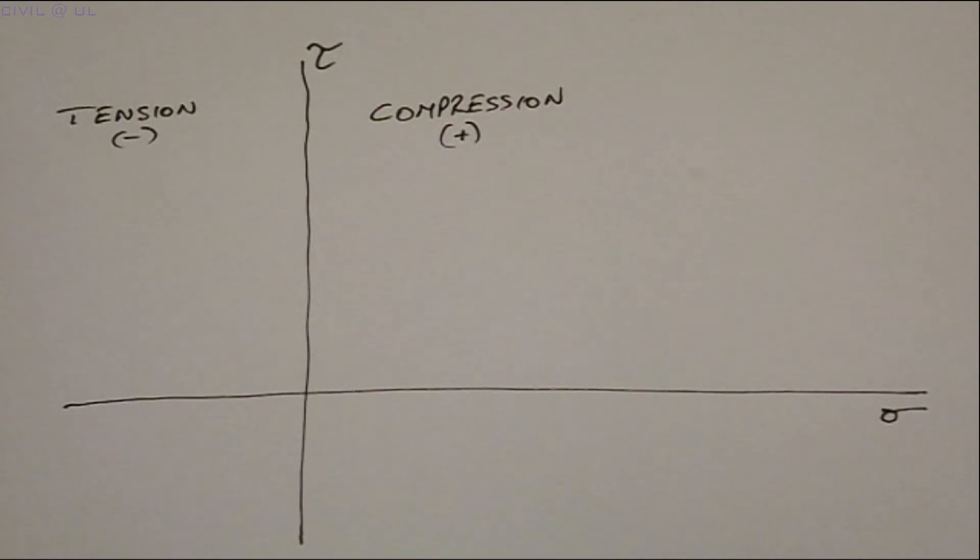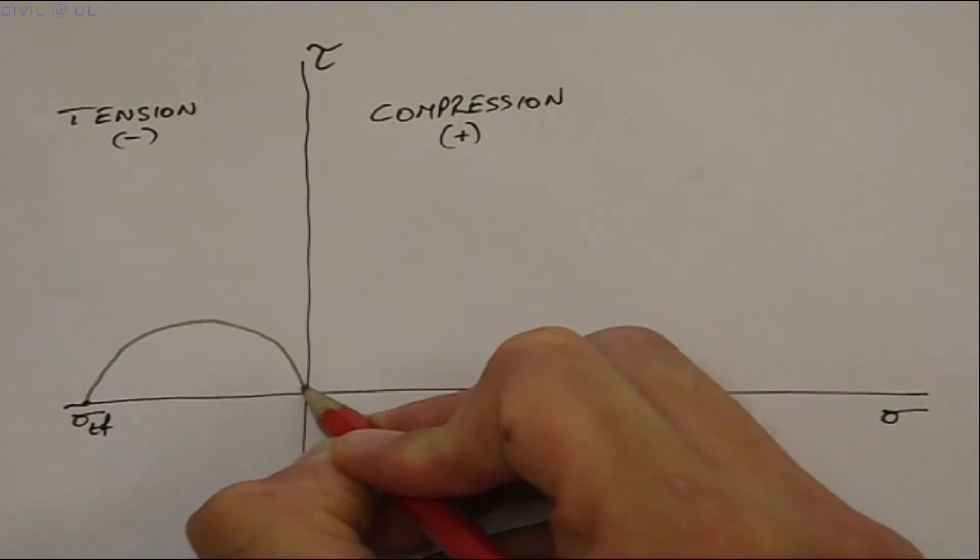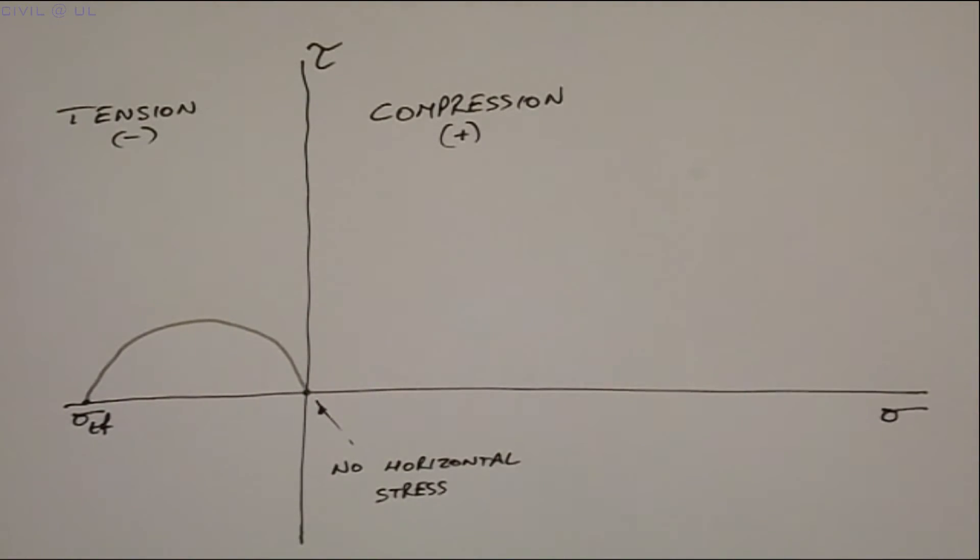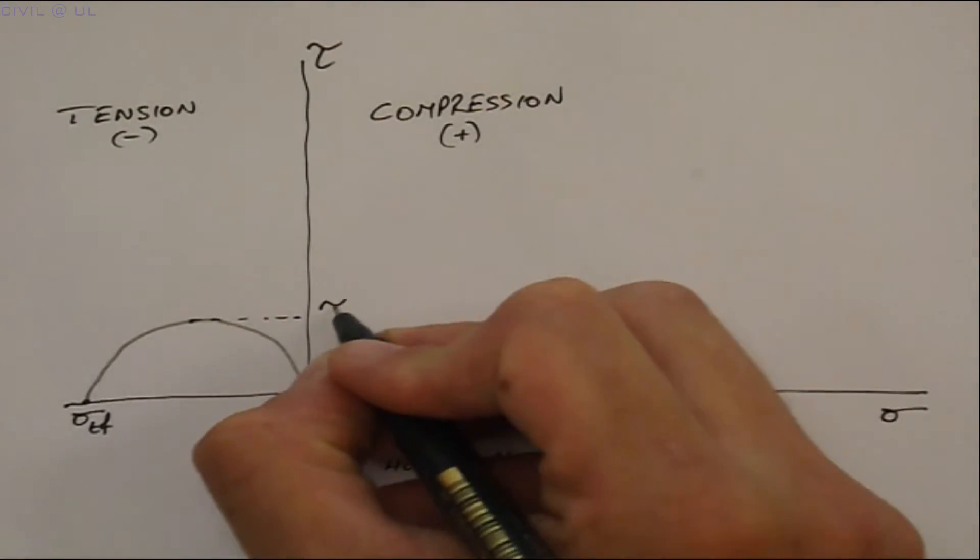Plotting this on our shear stress versus normal stress axis, the diameter of the Mohr's circle at failure is determined by the distance from the origin, as there is no applied horizontal stress, to the failure stress in tension. Drawing the Mohr's circle, we see the steel fails at a shear stress of tau sf.